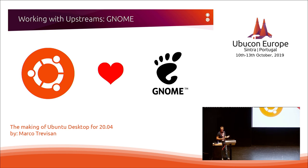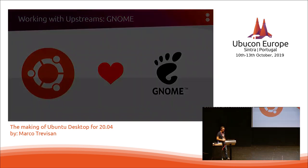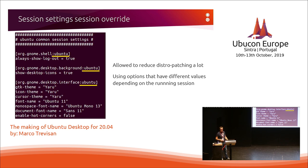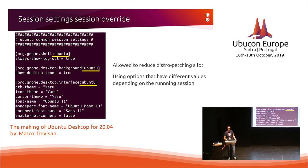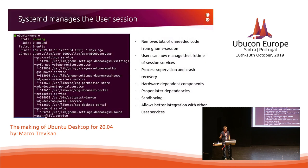Ubuntu has two main upstreams: GNOME for the UI side and Debian for the packaging side. Starting with GNOME, we've done lots of upstream work — low-level work that allowed us to improve and personalize the Ubuntu experience without needing distro-specific patches or changing large amounts of code depending on what GNOME was running on. Basically now GNOME allows a lot of personalization depending on where it's running, and this is work we did upstream.